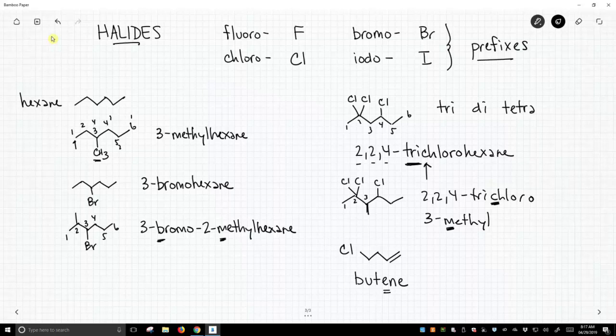So actually, you number the molecule, the chain, giving the alkene precedence, and the chlorine just gets whatever's left over. So you would call this 4-chloro-1-butene because it's the alkene we number from the end that's closer to the alkene, not that's closer to the branching chloride.